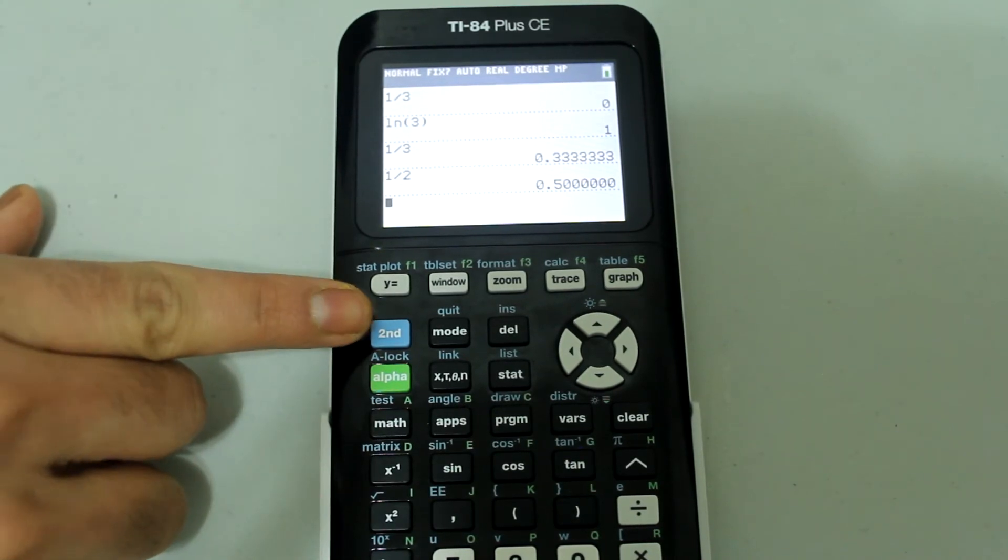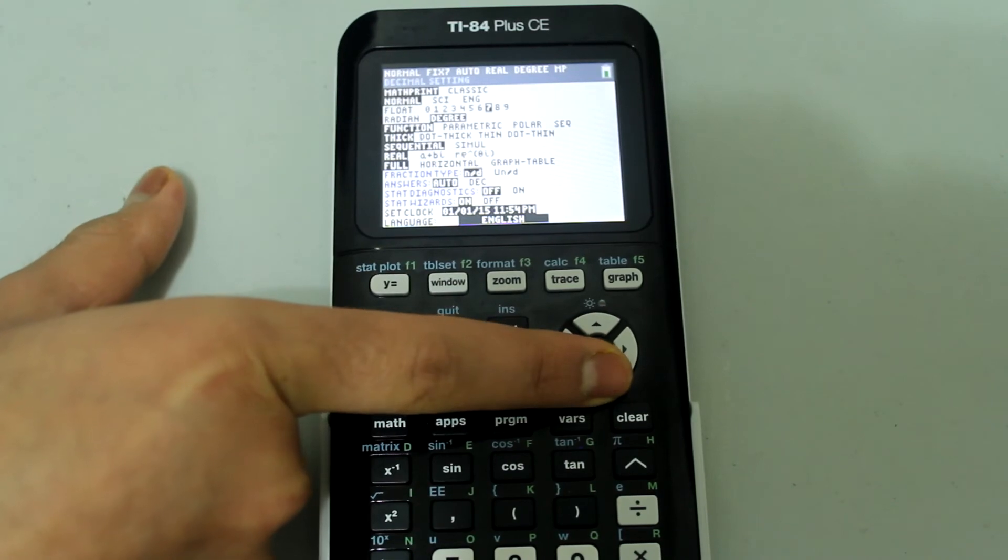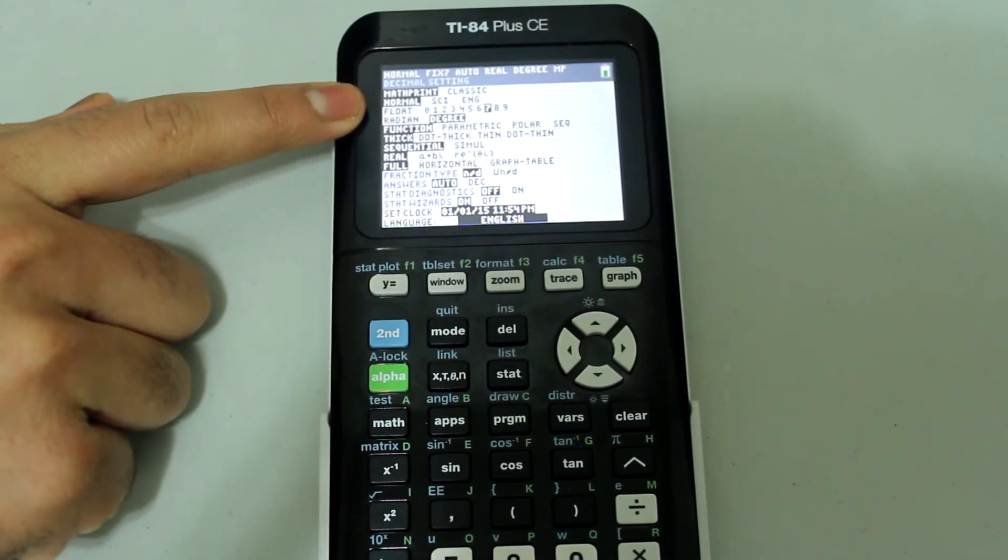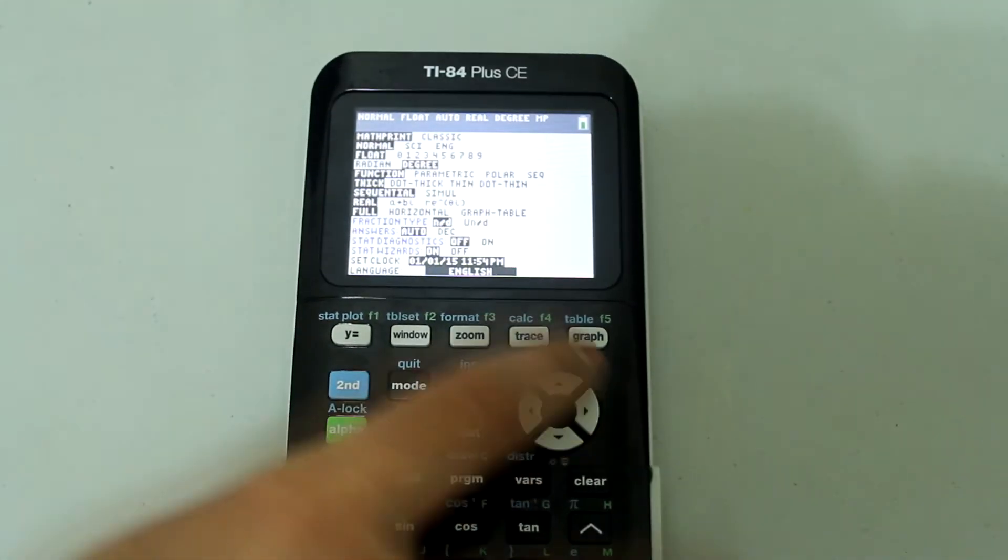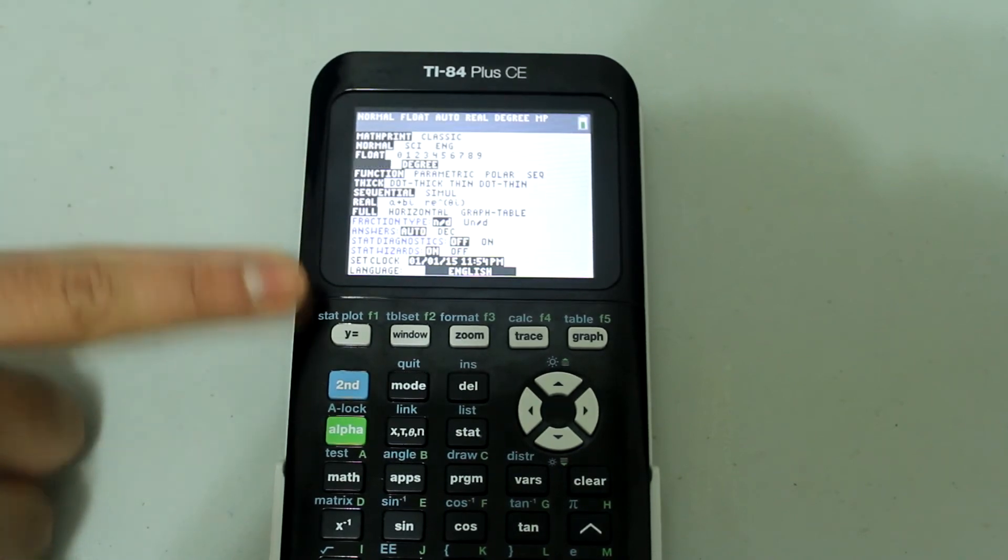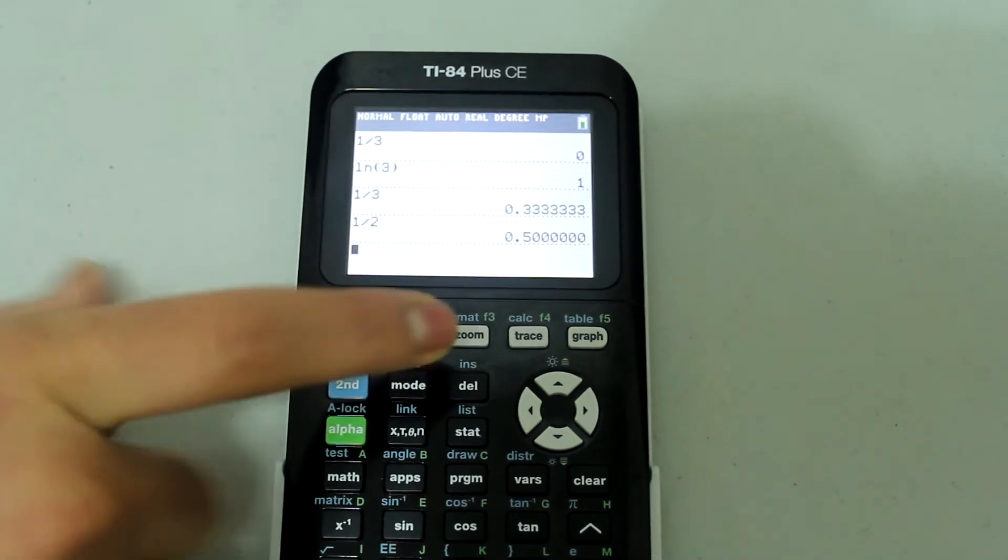what we're going to do is go back to mode and arrow down until the cursor is blinking on float. Just press enter and arrow up or down just to make sure that float is highlighted in black. And then second mode to quit.